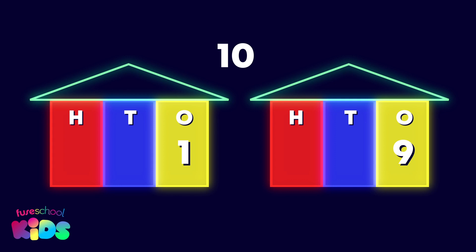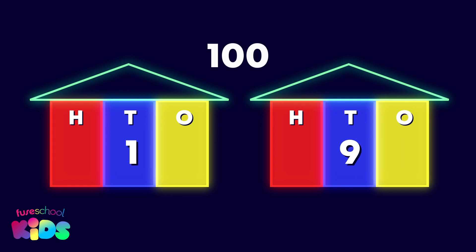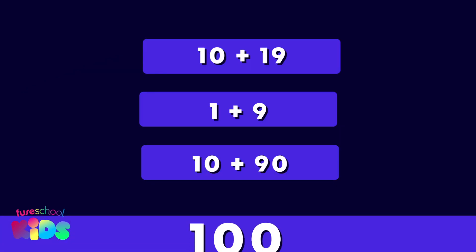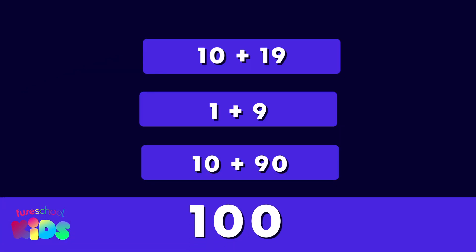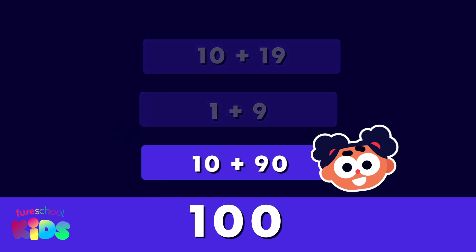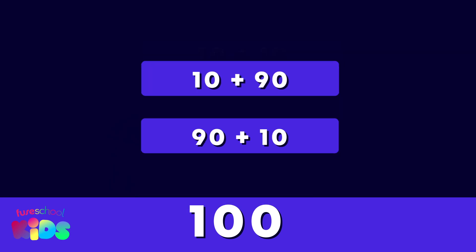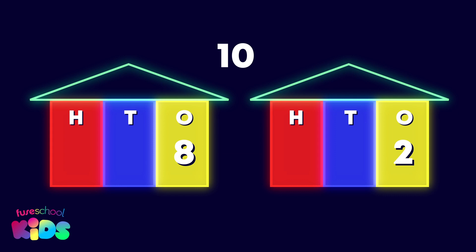One and nine is our next number bond to ten. We move them one place to the left and add our placeholders on this side. Which of these are the number pairs — ten and nineteen, one and nine, or ten and ninety? Ten and ninety! Well done. Ten plus ninety equals one hundred, and ninety plus ten equals one hundred.